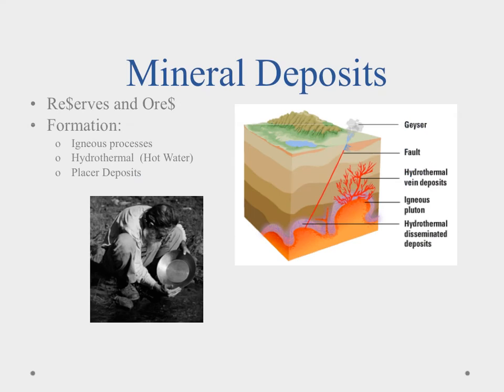Fossil fuels are deposits that we mine out and use. There are other resources too — mineral reserves and mineral ores. Ores tend to be metals; reserves tend to be other minerals we use. These terms apply when there's enough material to be financially rewarding to mine — meaning the profit covers the cost of mining. They form through three processes: igneous processes, hydrothermal processes, and placer deposits.